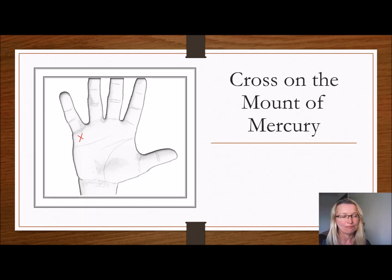We'll start with a cross on the Mercury mount, and as you can see by this image, the Mercury mount is under the pinky. Now what that means, if it's on the mount, is that there may be some issues or problems in communication or in business. So traditionally that is one of the marks of someone who's a bit dishonest. It could be a dishonest businessman, for instance.